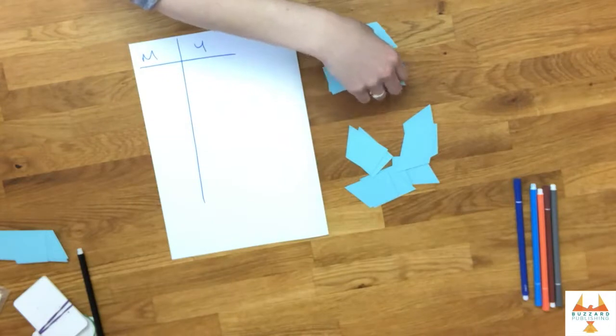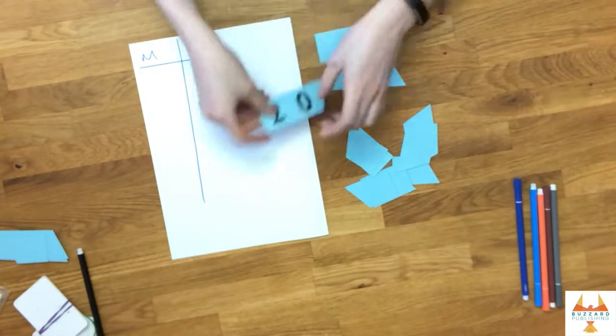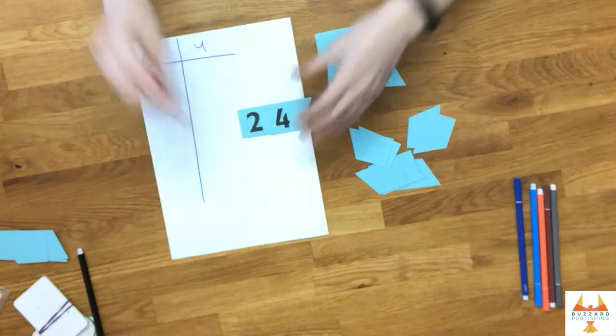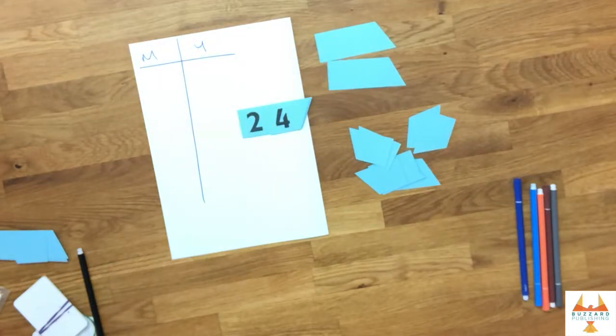So I turn over a tens card, 20, and then I pick a ones card, so 24. Now I know that eight times three is 24. So 24 divided by three is eight. There are no remainders so I score nothing.